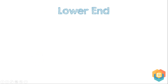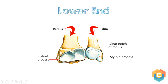The last part of the radius bone is the lower end. The lower end is the widest part and provides five surfaces. The lateral surface projects distally as the styloid process. The dorsal surface provides a palpable dorsal tubercle, known as Lister's tubercle, which is limited medially by an oblique groove.